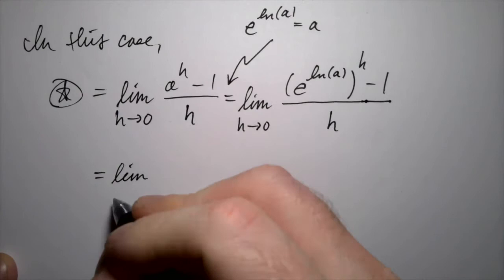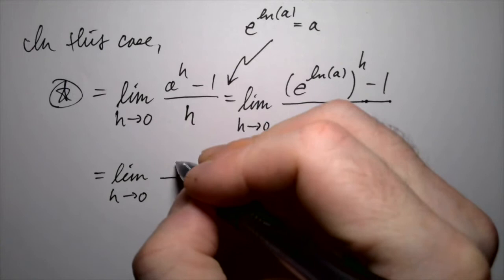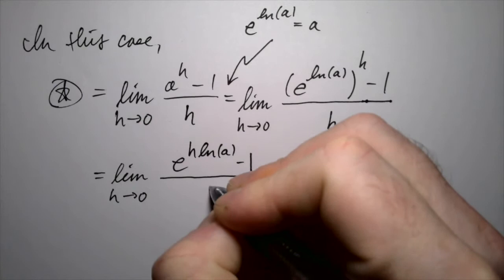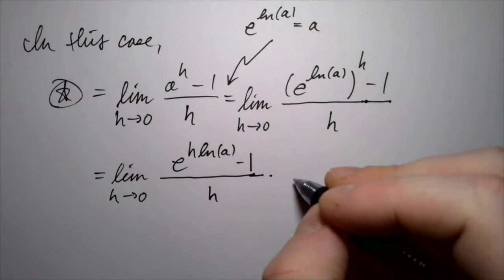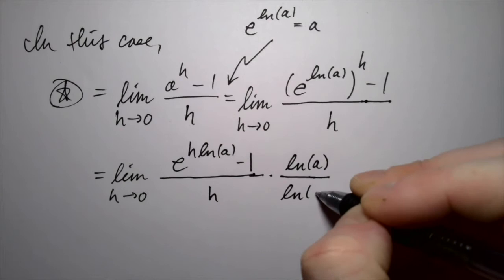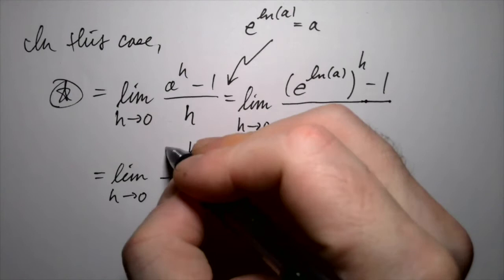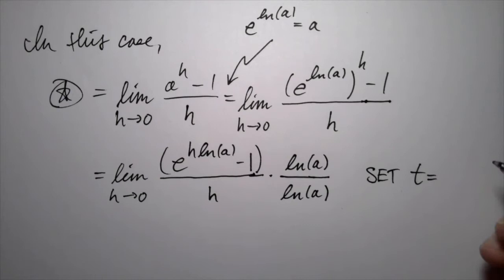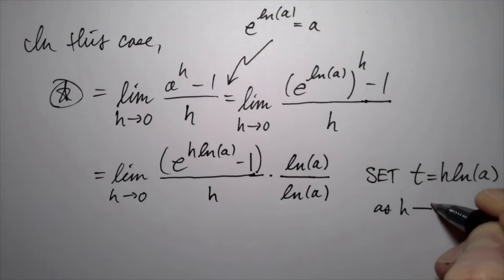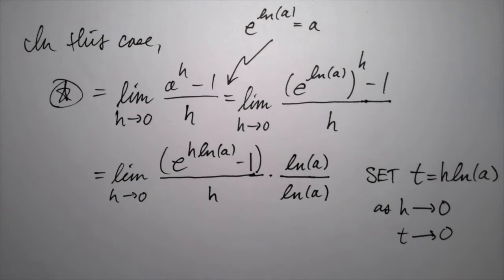Continuing the calculation, we get e to the h times ln of a, using the rules for exponents, minus one, divided by h. Now I'm going to multiply top and bottom by the natural log of a, and introduce a new variable t equal to h times the natural logarithm of a. Notice that as h goes to zero, because a is a constant, t will also go to zero.